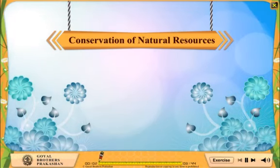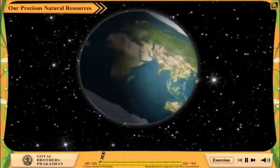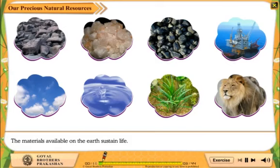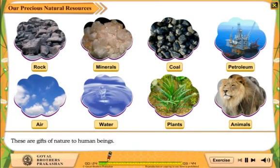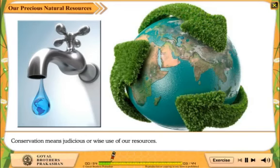Conservation of Natural Resources. Our precious natural resources — the materials available on the earth — sustain life. These materials, like rocks, minerals, coal, petroleum, air, water, plants and animals, are called natural resources. These are gifts of nature to human beings. We must conserve these resources. Conservation means judicious, or wise, use of our resources.